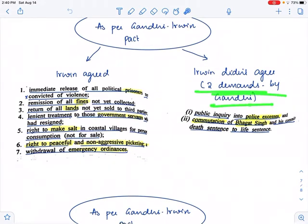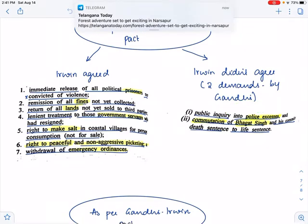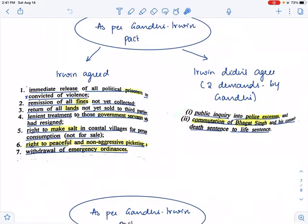There were two demands that were put forward by Gandhi that Irwin did not accept. One was that he did not allow the public inquiry into police excesses. So police excess was there and Gandhi wanted a public inquiry to be done on this police excess. Irwin does not accept this demand of Gandhi. Gandhi said that Bhagat Singh's death sentence should be changed to life sentence. He said that Bhagat Singh should not be subjected to the death sentence but maybe it can be commuted to the life sentence. And this demand of Gandhi again was not accepted by Irwin.